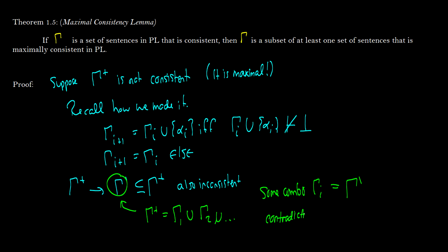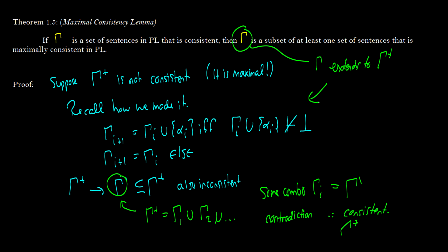Hopefully the wording was clear enough. We've proven a contradiction, therefore gamma-plus is consistent. We have now proven that if we have a set gamma of sentences that is consistent, then gamma is a subset of at least one set of sentences that is maximally consistent. This theorem wasn't exactly a direct proof — we just say that gamma extends to gamma-plus since we've proven we can extend it, and then employ this proof strategy. There is the maximal consistency lemma proven, along with two sub-proofs.